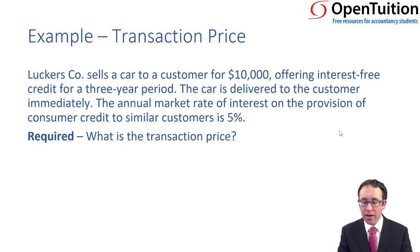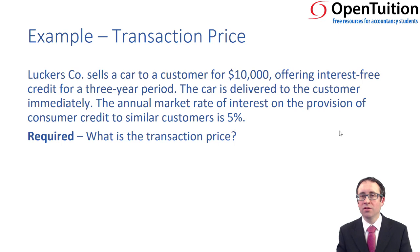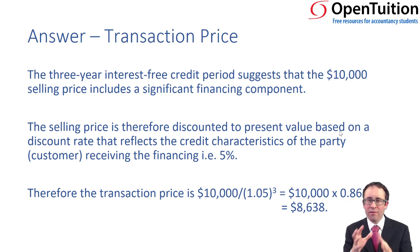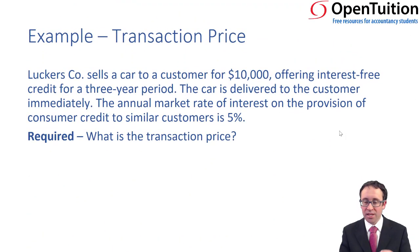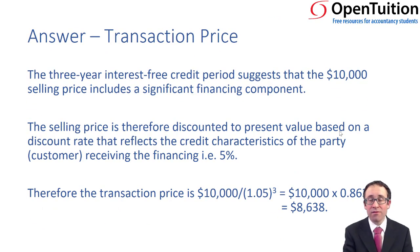We're told the market rate of interest on the provision of consumer credit to similar customers is 5%. So if this customer was to go out and borrow $10,000 to buy this car, they would be charged 5%. What we need to do is work out what belonged to each. There's three-year interest-free credit, suggesting that the $10,000 involves a financing component. We know we're going to receive $10,000 in three years, so we discount that back to present value at 5%.